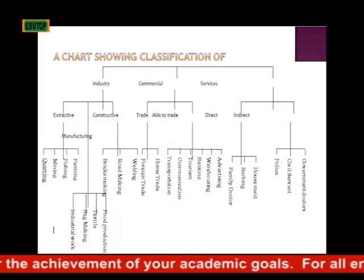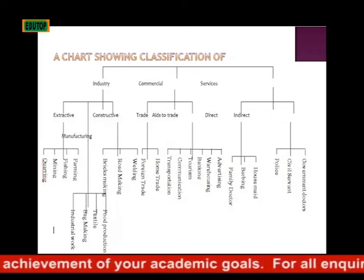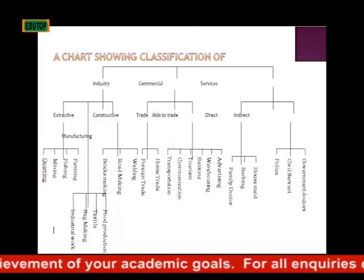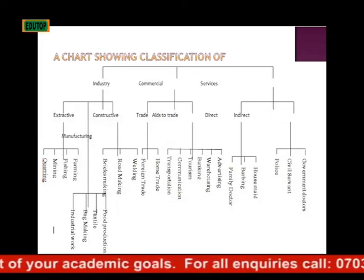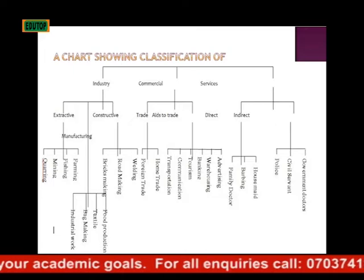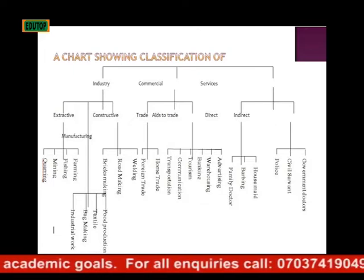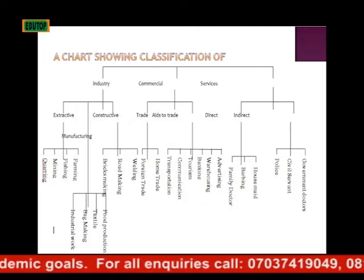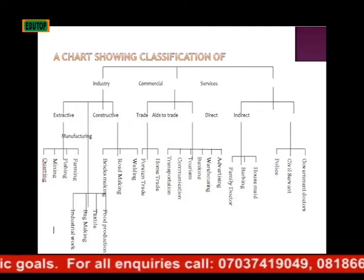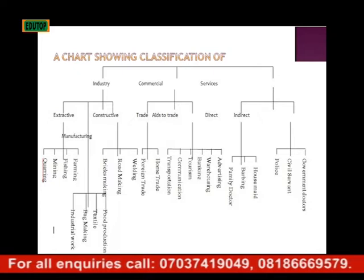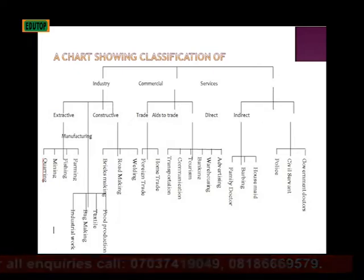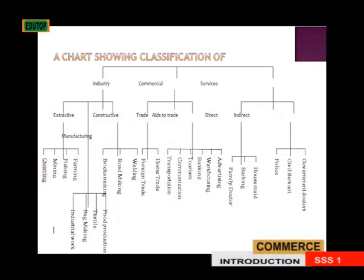Under services, we have direct and indirect. Under direct, we have housemate, barber, and family doctor. Under indirect, we have government doctors, civil servants, and police.